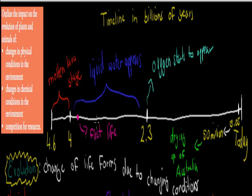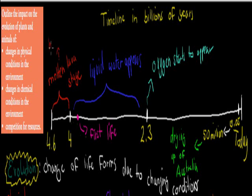I'll explain this through using this timeline here. This is a timeline of the Earth itself. Earth is officially, at the moment, estimated to be about 4.6 billion years old. You can imagine that when it was created about 4.6 billion years ago, Earth itself was quite different. At 4.6 to 4 billion years ago, we call it the molten lava stage. That's when Earth's temperatures were really high — so high temps, and just almost purely lava.